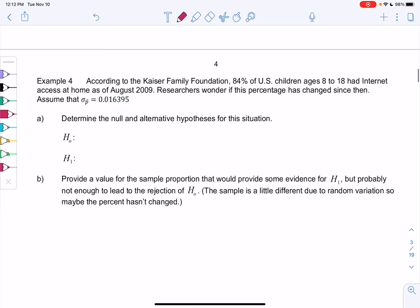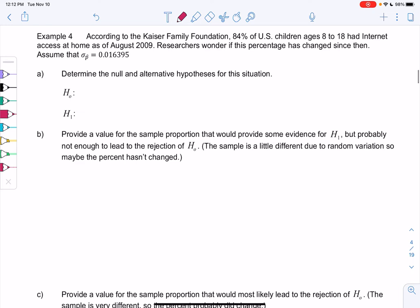Let's try example four. So according to the Kaiser Family Foundation, 84% of U.S. children ages 8 to 18 had internet access at home. So researchers wondered if this percentage has changed since then. And we know sigma is 0.016395.